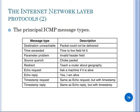The next ICMP message type is source quench, which means a traffic congestion problem has been generated. The sender's data is not successfully sent due to congestion, so the packet is discarded. The next is the redirect message, which is used to teach a router about geography — when data should be sent via a different route, a redirect message is generated.